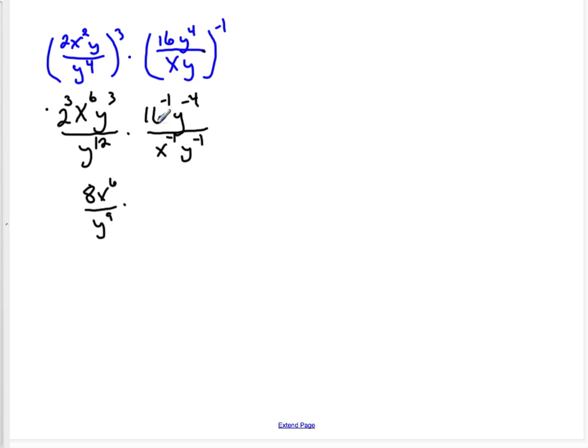I'm then going to take anything that has a negative exponent and move it to the other side of the denominator, and that will make it have a positive exponent. So 16 to the negative 1st, I can put that down here and it will now be 16 to the 1st power, which is just 16.